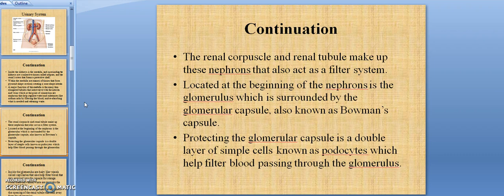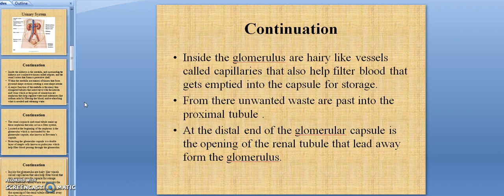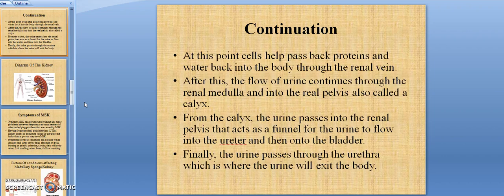The glomerular capsule is a double layer of simple cells known as podocytes which help filter blood passing through the glomerulus. Inside the glomerulus are hair-like vessels called capillaries that also help filter blood that gets emptied into the capsule for storage. From there, unwanted waste is passed into the proximal tubules. At the distal end of the glomerular capsule is the opening of the renal tubule that leads away from the glomerulus. At this point, cells help pass proteins and water back into the body through the renal vein. After this, the flow of urine continues through the renal medulla and into the renal pelvis, also called a calyx.